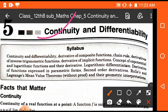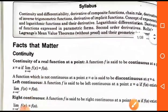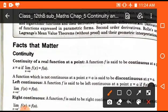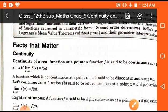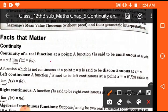In the first video we will discuss some important terms. First of all, I want to tell you what is the meaning of continuity. Continuity of a real function at a point is defined as: a function f is said to be continuous at a point x equals to a if limit x tends to a of f(x) is equal to f(a).